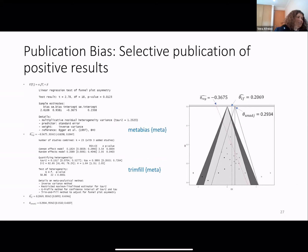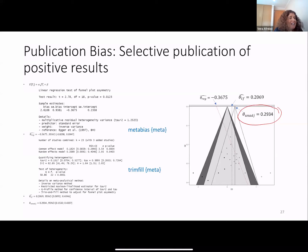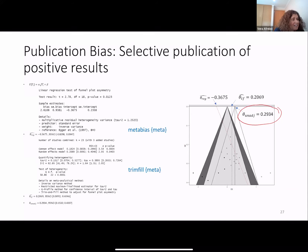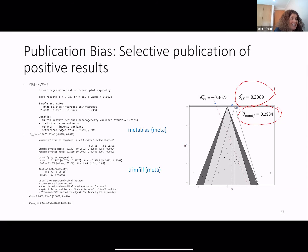In our example, we apply this method and obtain the adjusted value. When we perform the trim-and-fill method, we correct the overall effect for potential publication bias, and the value is lower. When we correct with the regression scenario, the value is even lower.